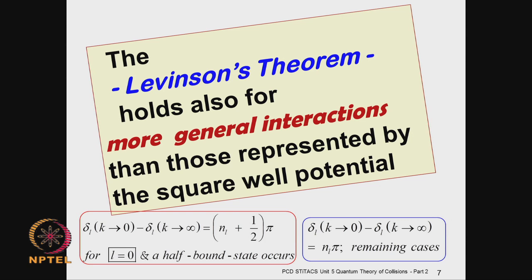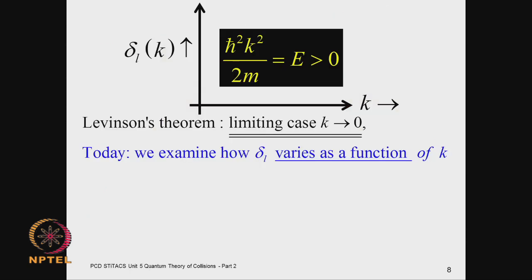This theorem states simply that the phase shift is either nπ or (n + 1/2)π depending on whether l ≥ 1 or l = 0. We obtained this theorem explicitly for the square well potential; however, it holds for many general potentials, not just the square well — which is why it is such a powerful theorem.